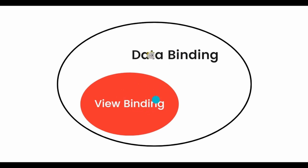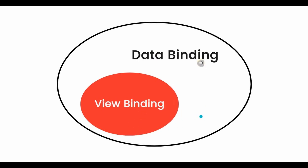View binding is a subset of data binding. Whatever functionalities view binding can perform, data binding can perform as well — but not vice versa. In simple words, data binding can be used as a substitute for view binding, but view binding cannot be used as a substitute for data binding. Data binding can replace findViewById and also connect data to the UI, while view binding can only replace findViewById.